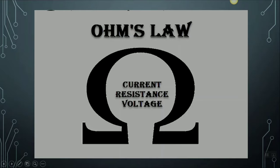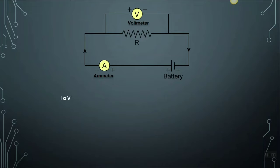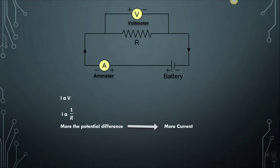Ohm's law sums up the relationship between current, resistance, and voltage. In an electric circuit, the flow of current is directly proportional to the potential difference between the points and inversely proportional to the resistance. More the potential difference, more will be the flow of current. More the resistance, lesser will be the flow of current. This is the basic concept of Ohm's law.